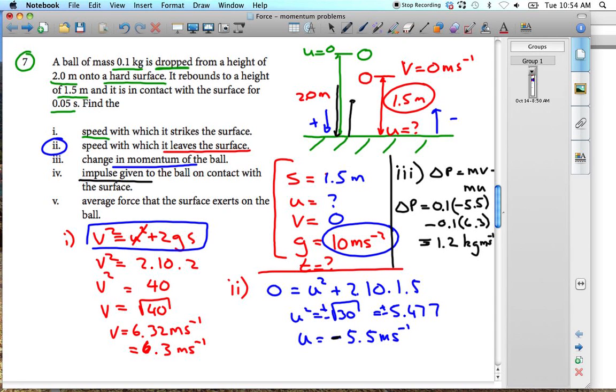Now the impulse given to the ball in contact with the surface - the impulse is equal to the change in momentum. So this is actually equal, so your impulse which is F delta T would therefore equal 1.2 kilogram meters per second.